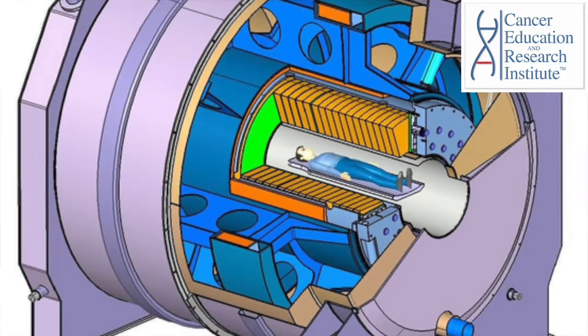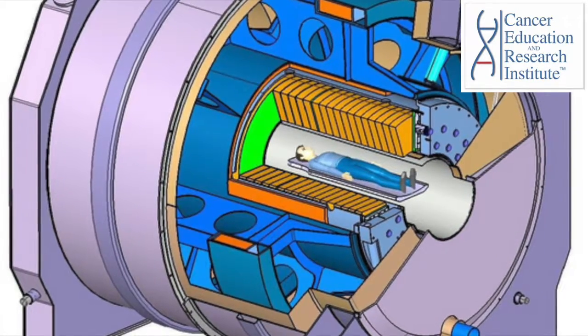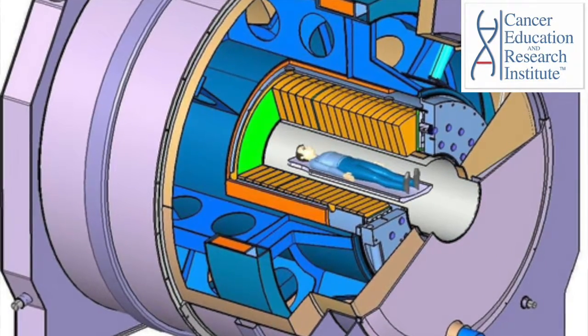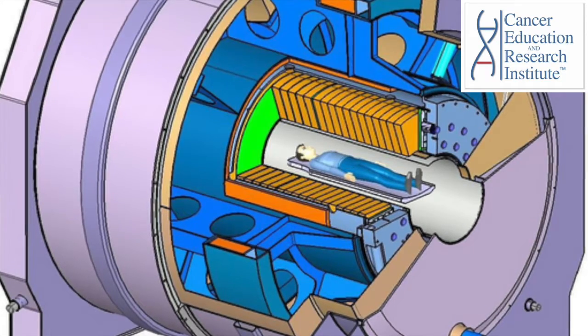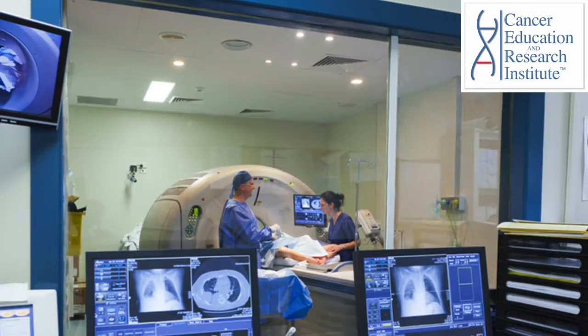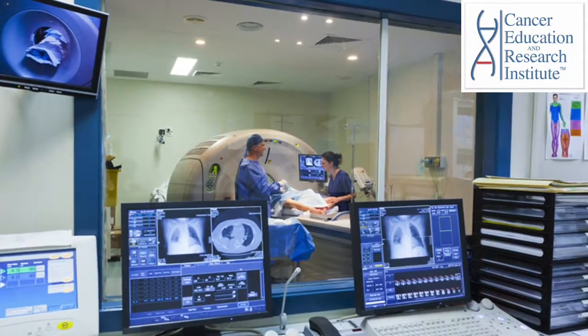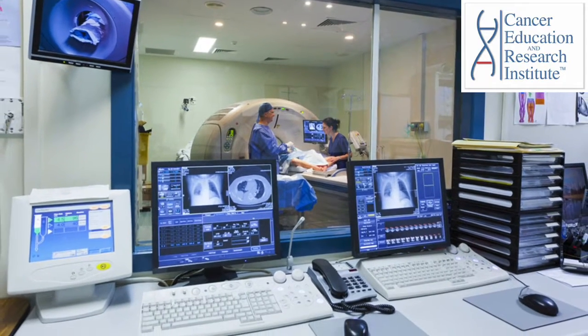The tissues absorb this energy and emit radiofrequency signals in the magnetic field. These signals are detected by antennas near to the examined part of the body and processed by a computer. Through computer analyses, the images are obtained based on the signals.